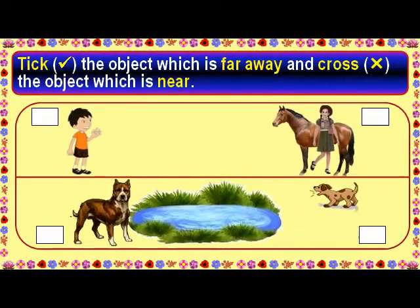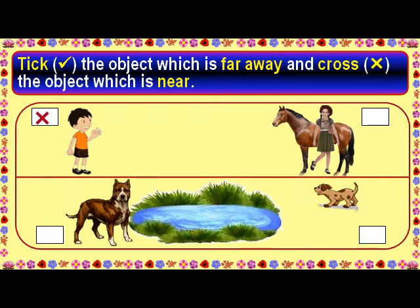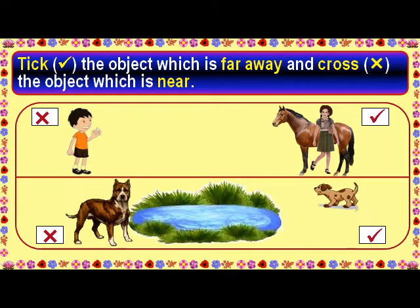Tick the object which is far away and cross the object which is near. The boy is far away from the horse. The girl is near to the horse. The big dog is near to the lake. The small dog is far away from the lake.